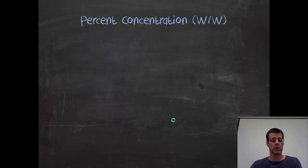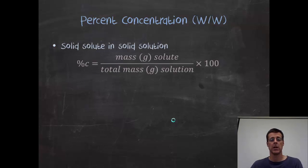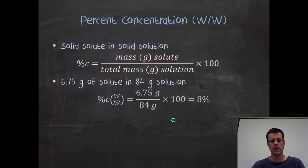And if it were two solids, maybe you're making an alloy, a special kind of stainless steel or brass or something, then it's a solid solute in a solid solution, and I would have masses for both. And it would look like that as a question, and it would look like that as an answer. 8%. That's it. That's all there is to it. So that's percentage concentrations in a nutshell.